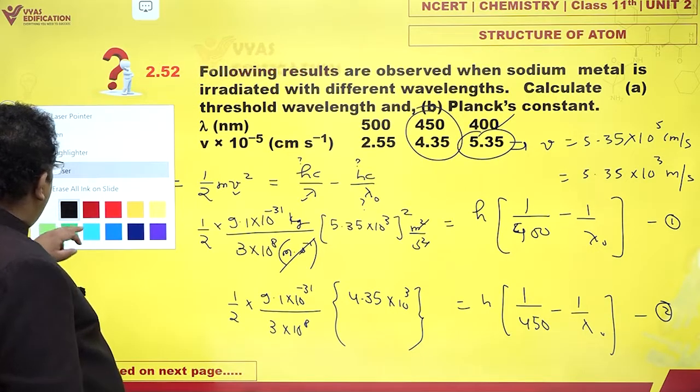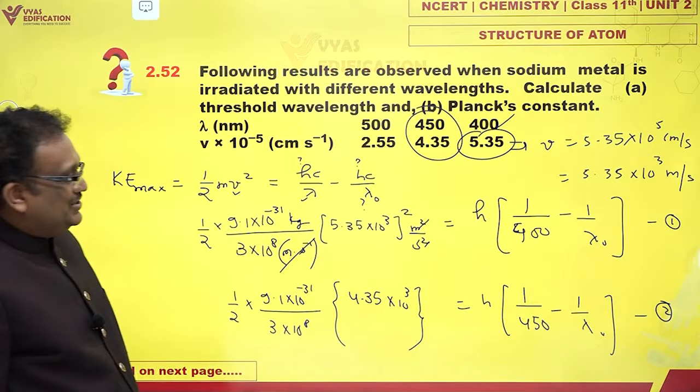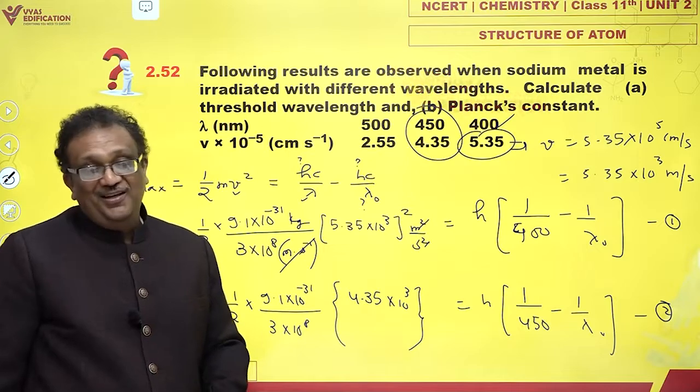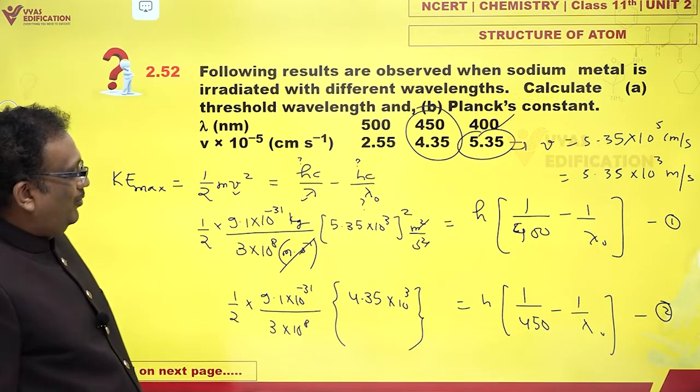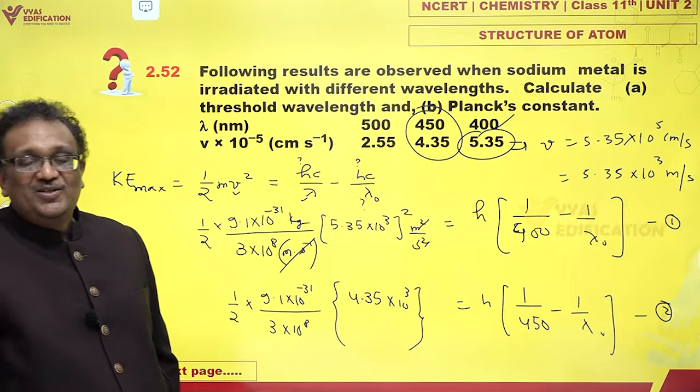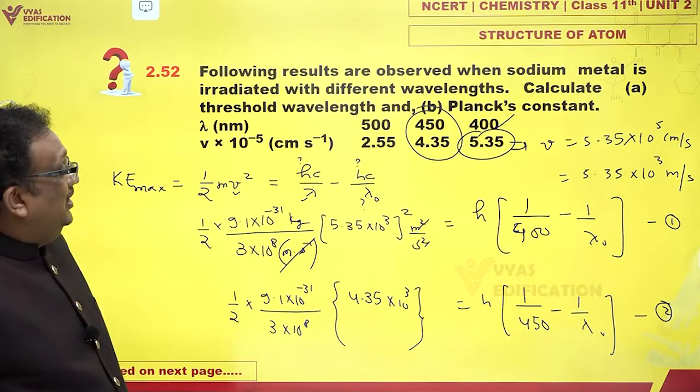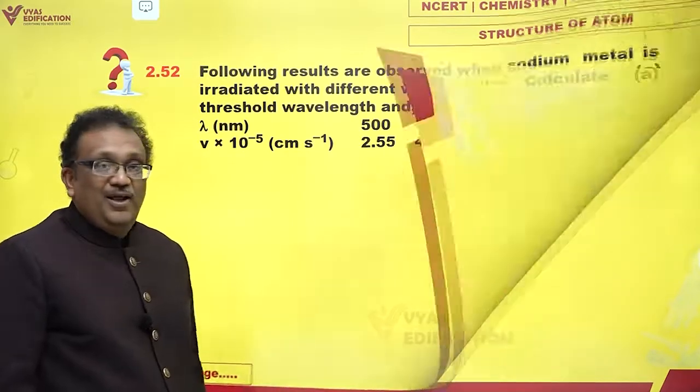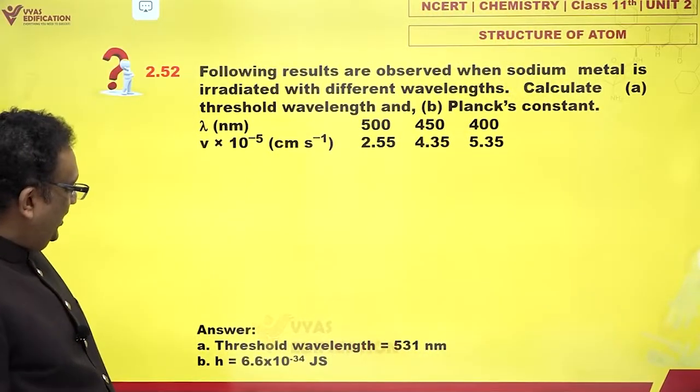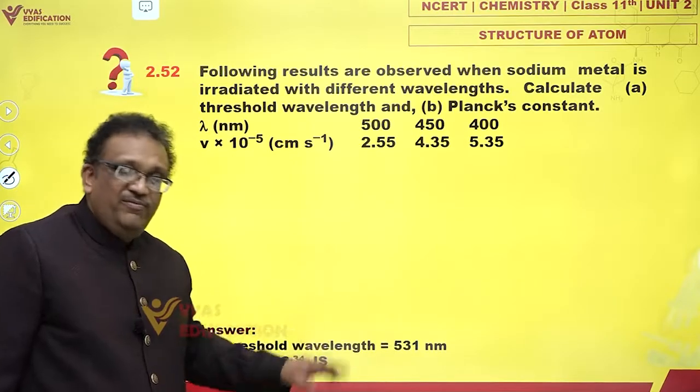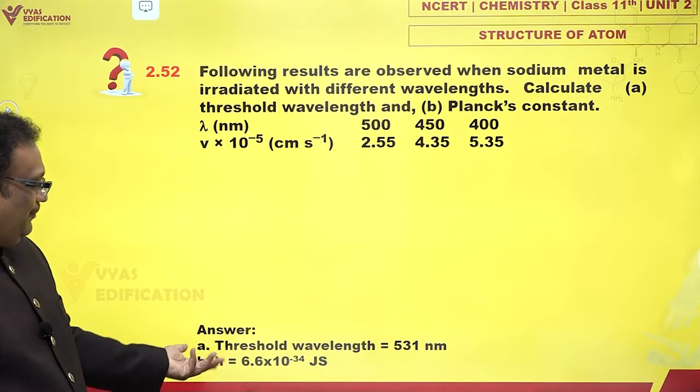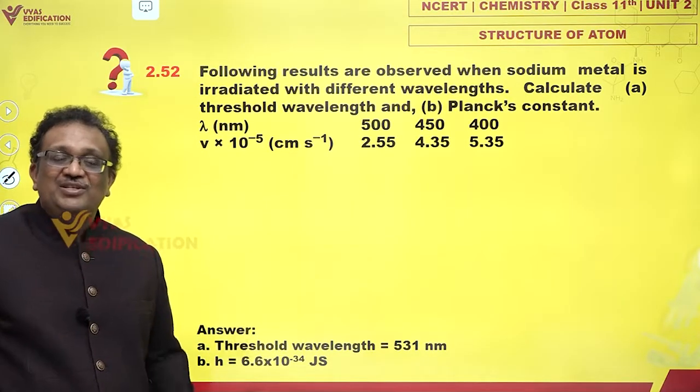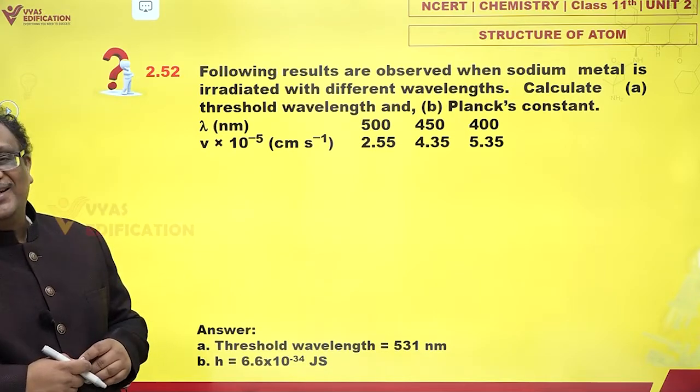I have two loving equations and I have two lovely unknowns. Can I not solve them? Yes I can. And the moment I do, well, I get the answer. I get answer for both Planck's constant H and threshold frequency lambda. What does that come out to be? Threshold wavelength comes out to be 531 nanometers. Planck's constant is our good old 6.6 into 10^-34 joule second.